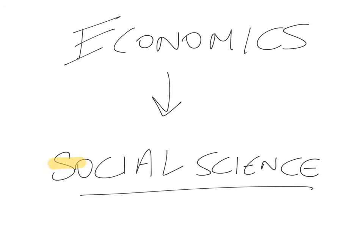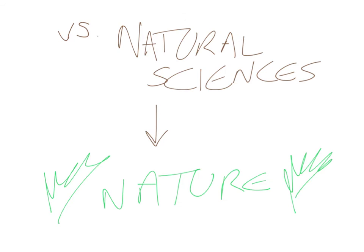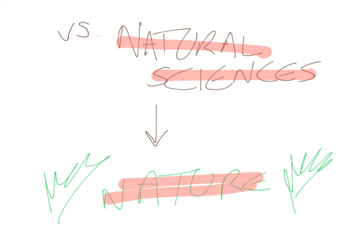Firstly, economics is a social science. Social sciences study societies, and societies are made up of people. This is opposed to the natural sciences which study nature. So, social sciences study societies — they study people in societies — while natural sciences study nature.